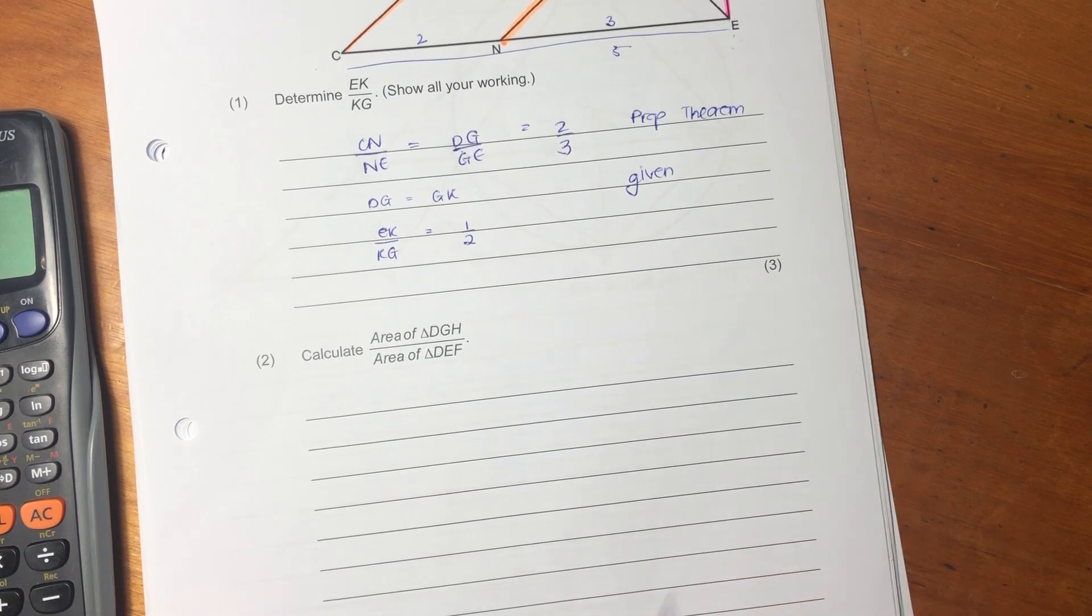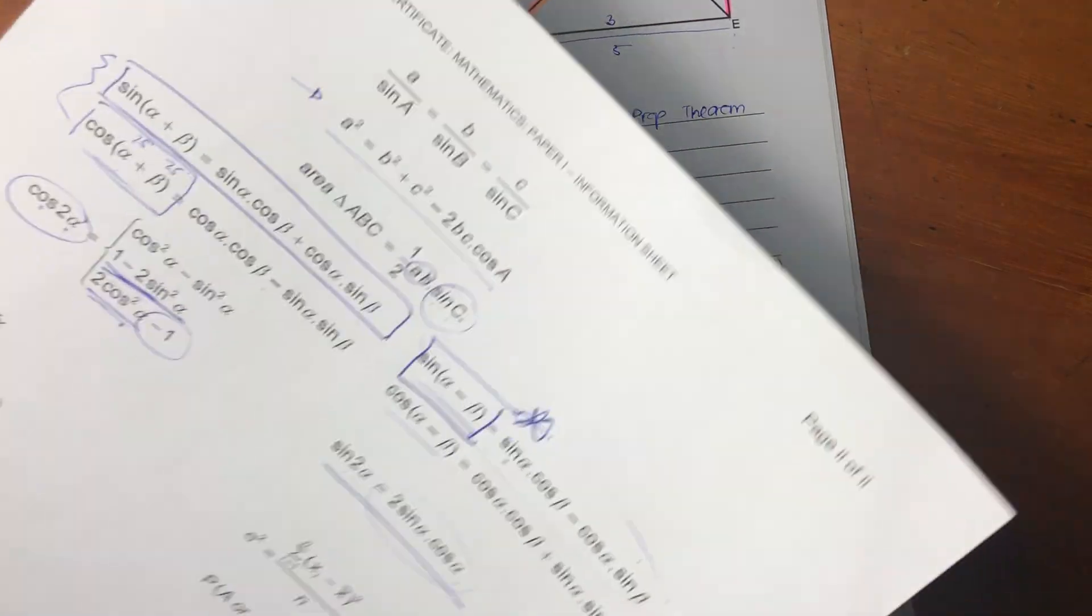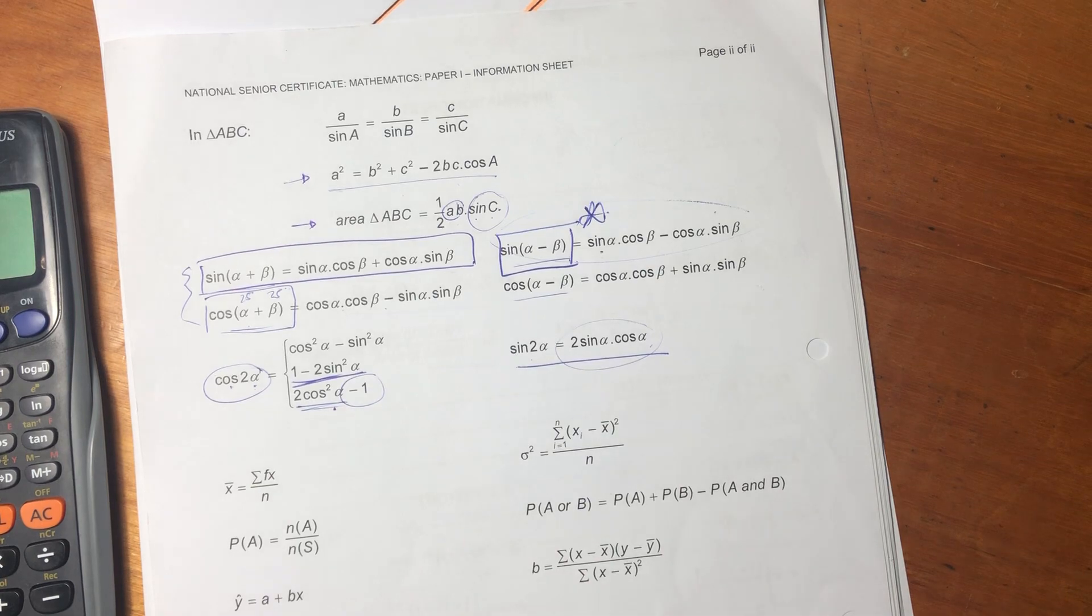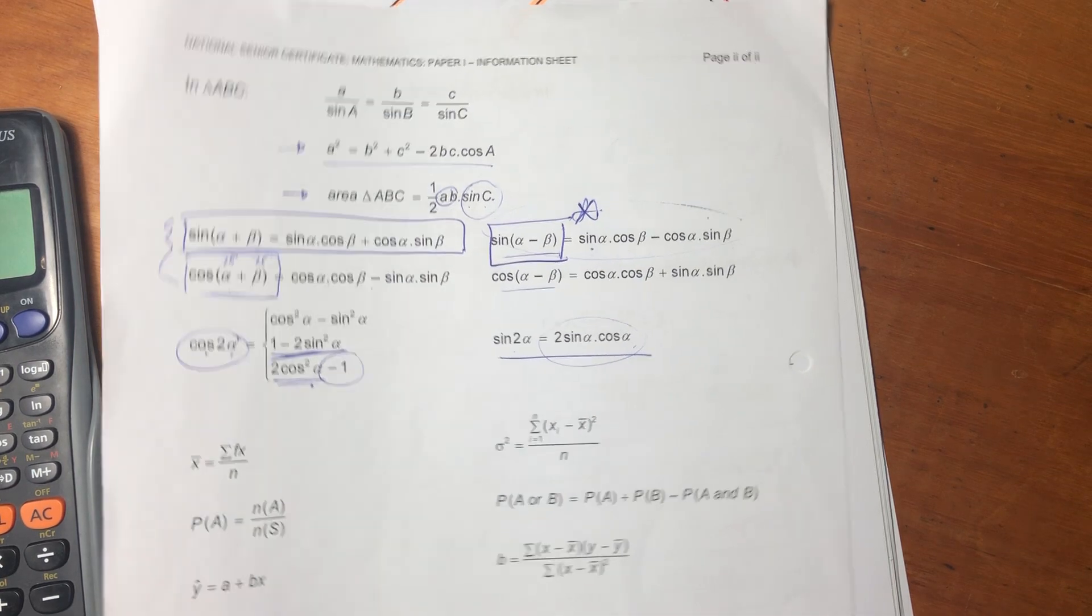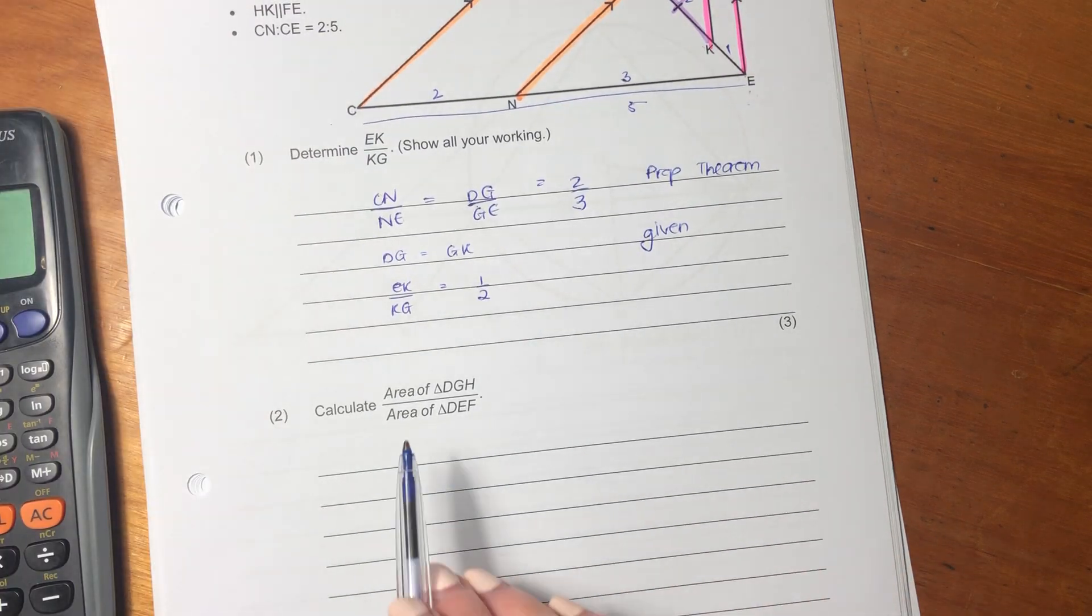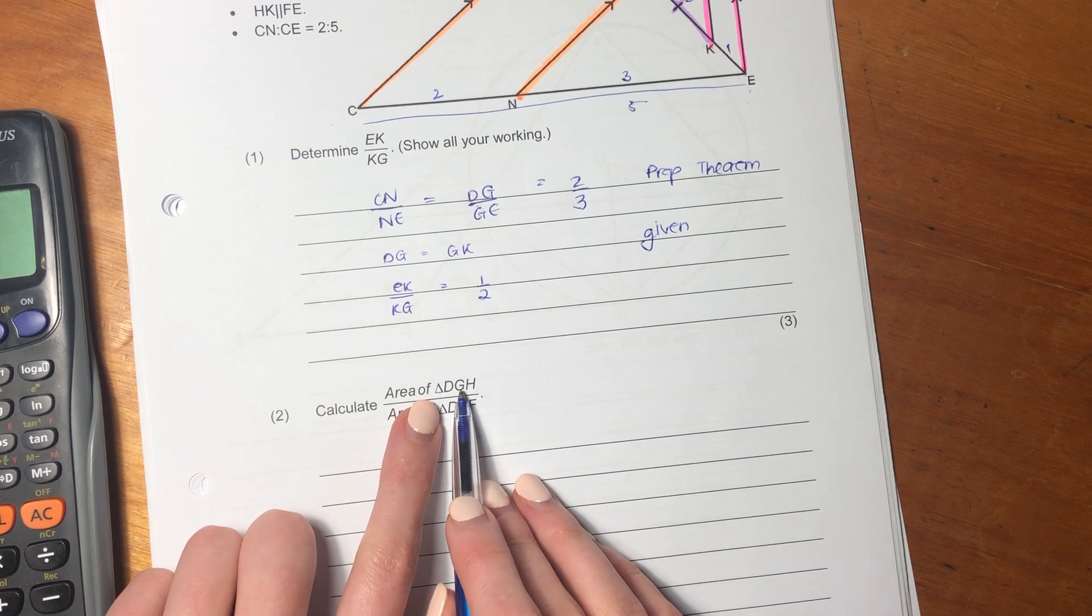Let's now move on to the next question. Now, the next question is an interesting one because we are looking at an area question. So you should be thinking, you should be going to your formula sheet, and you should be thinking this area formula of a triangle. But let's see which two triangles we're looking at. So it says, calculate the area of triangle DGH.